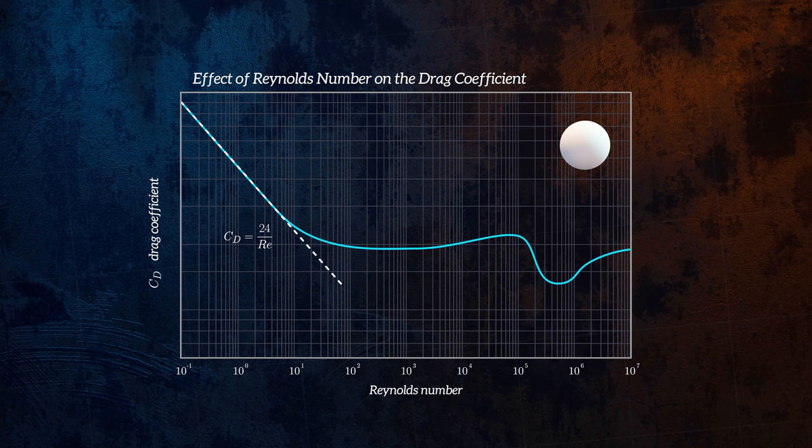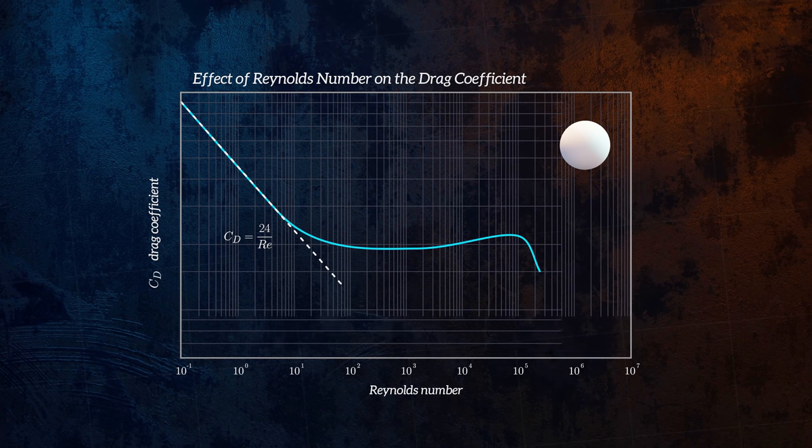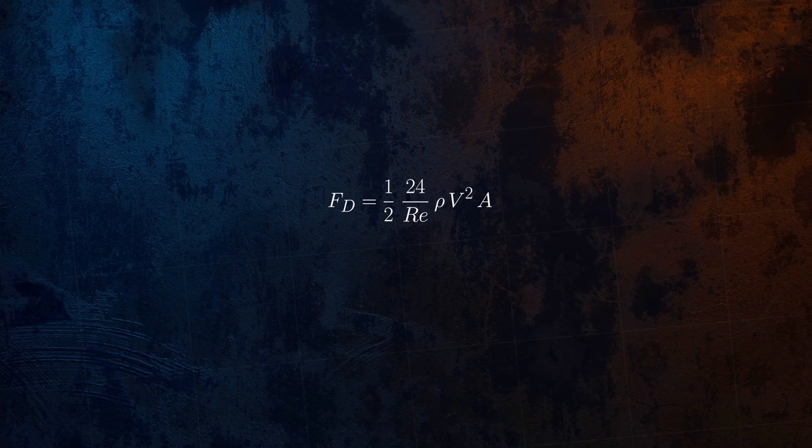At these very low Reynolds numbers, flow separation doesn't occur, even for very blunt bodies like the sphere, and so, all of the drag comes from friction drag. Plugging this equation for CD into the drag force equation gives us an interesting expression.